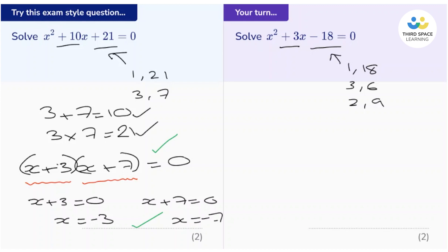Now, if two numbers multiply to give a negative answer, the signs must be different. One must be positive, and one must be negative. So it's going to be the 3 and the 6. And it's going to be negative 3 and positive 6. Because if we add those together, negative 3 add 6, is positive 3, thinking of the number line.